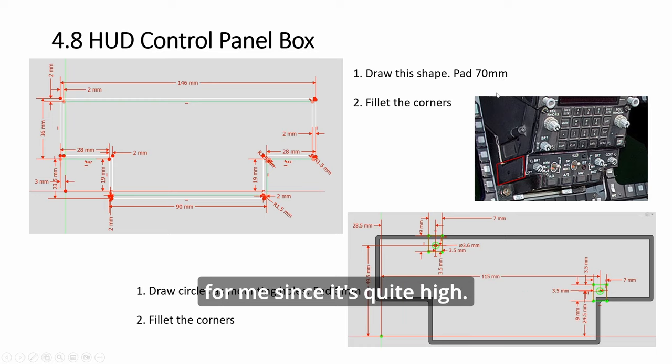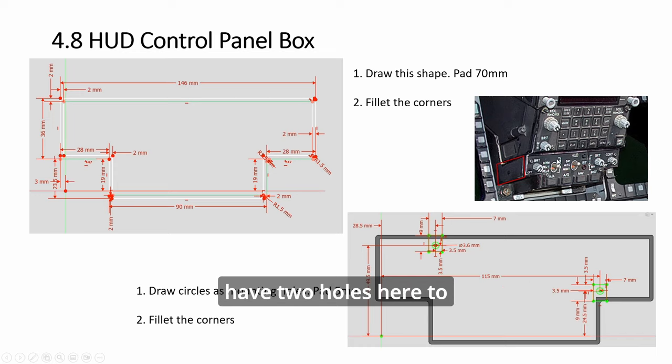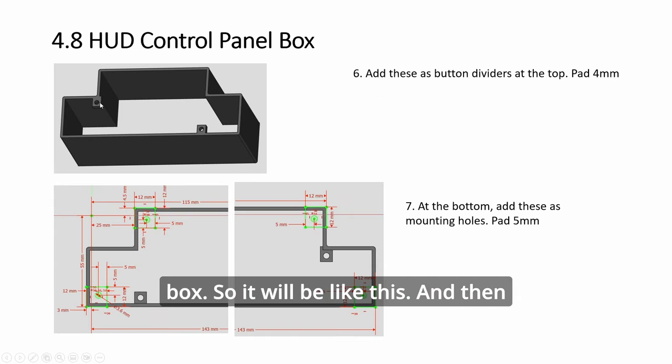You pad 70 for me since it's quite high. Alright, so after you build the panel, you build the box. And then as you can see here, we build two slots here with the hole to mount. We have two holes here. Okay, to mount the whole panel to this box. So it will be like this. Right? And then the bottom here, the four corners.